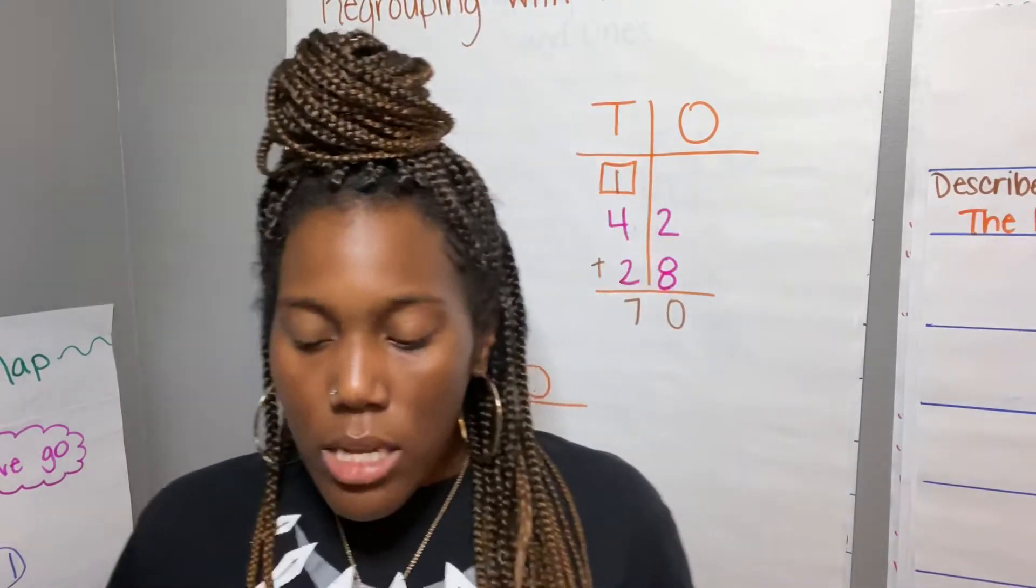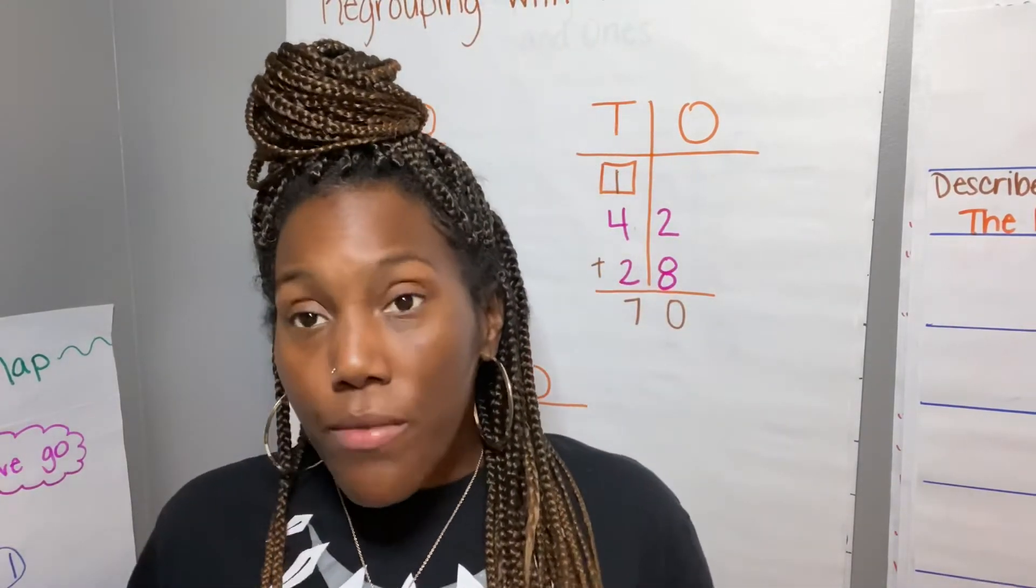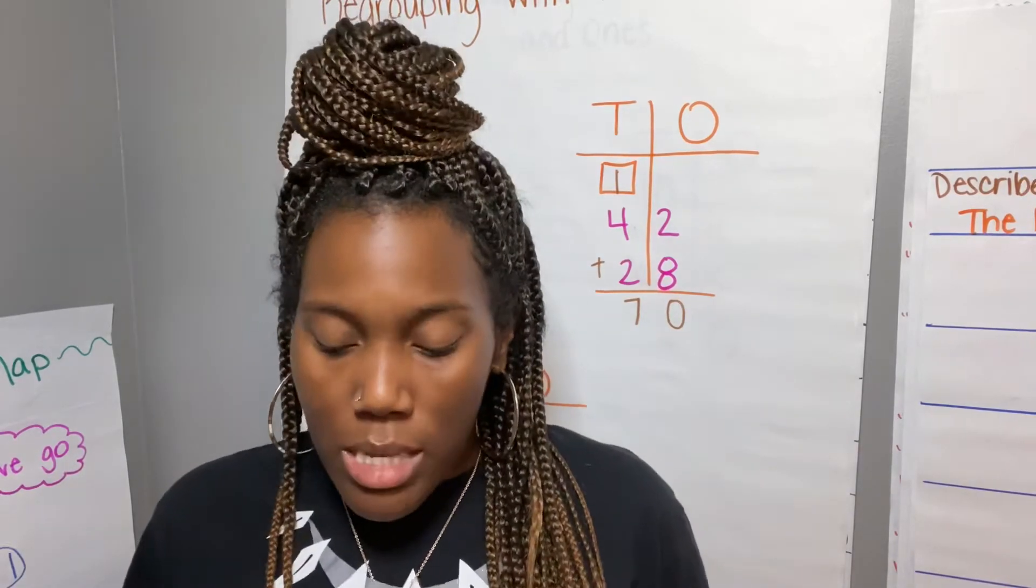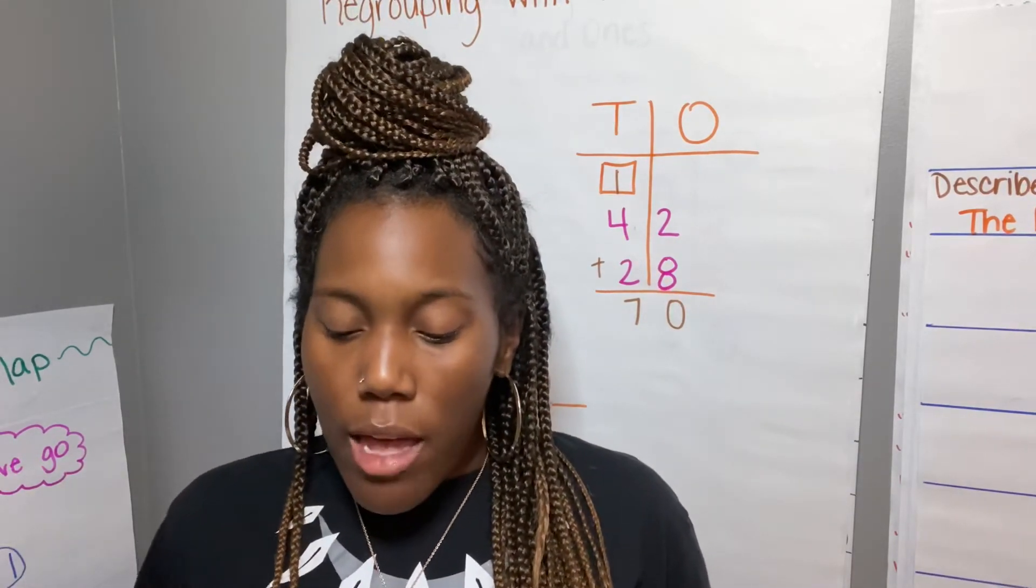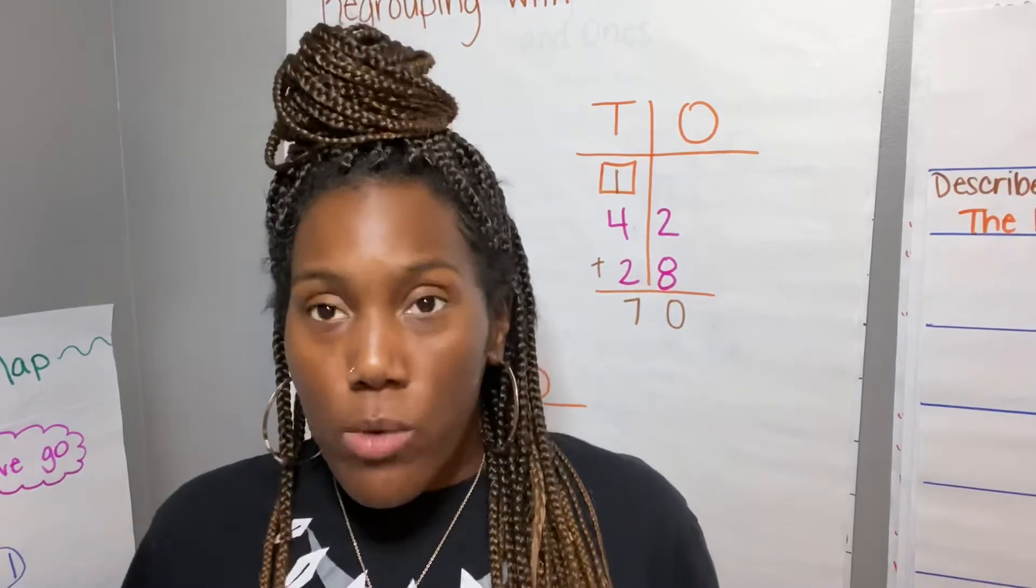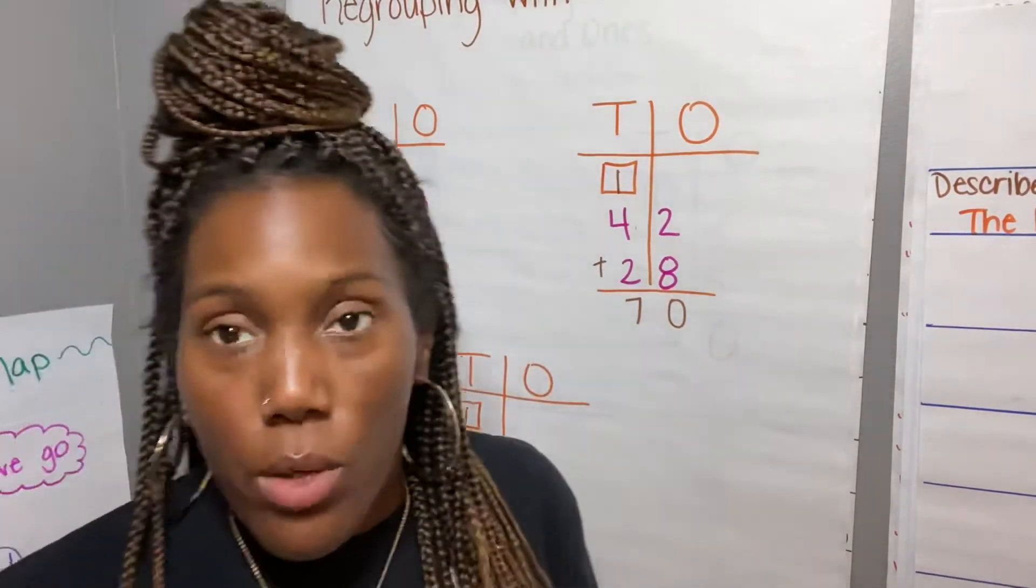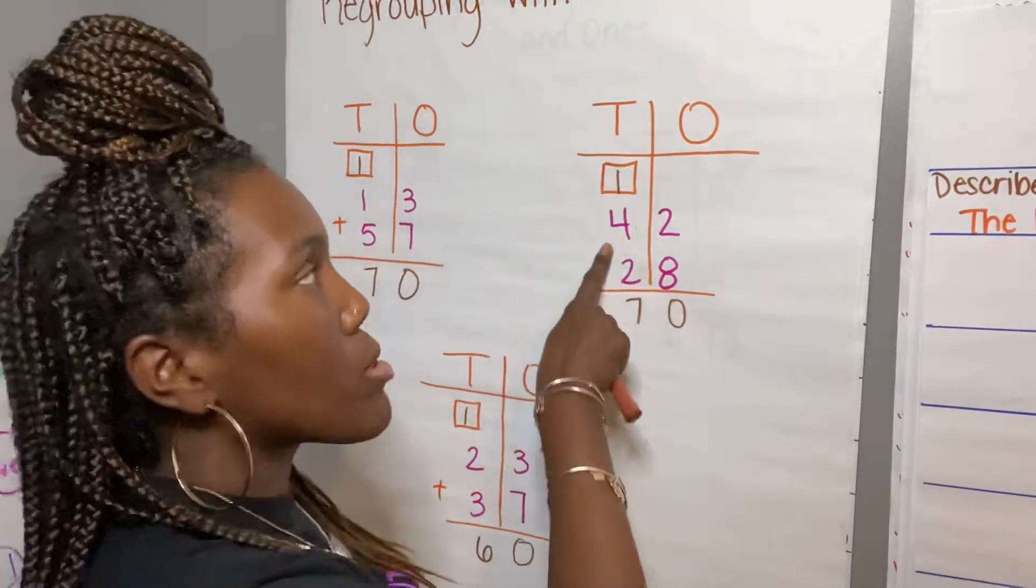The next is 46 plus 24, and then we're going to do 71 plus 19, and 56 plus 14. Remember to put it in your place value charts. Okay, I want to see you breaking those numbers up into tens and ones.